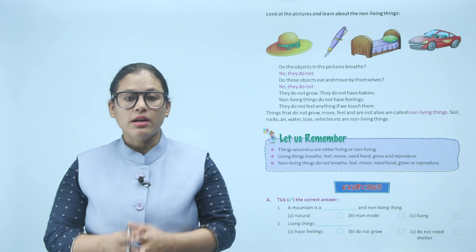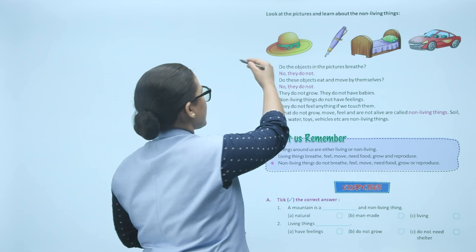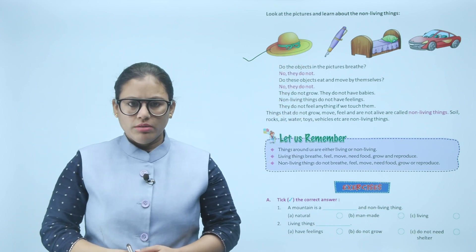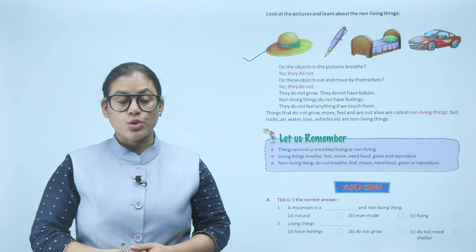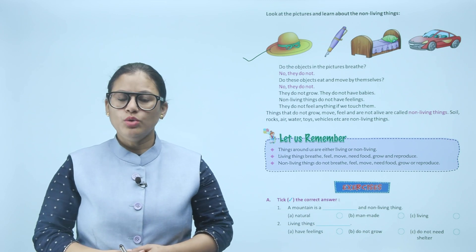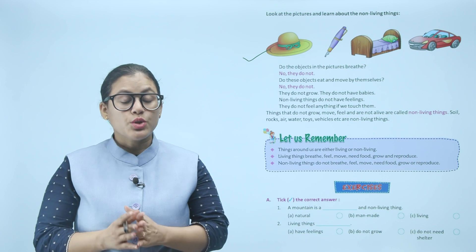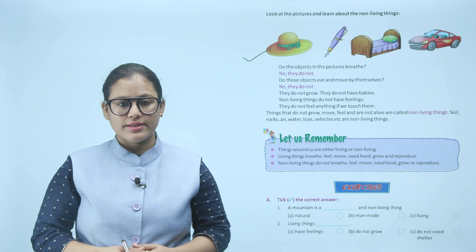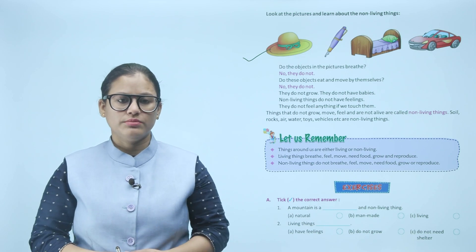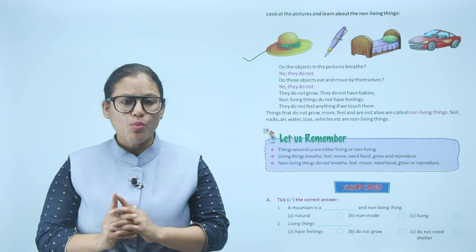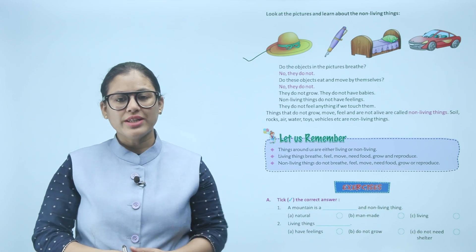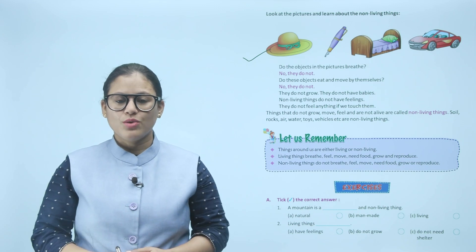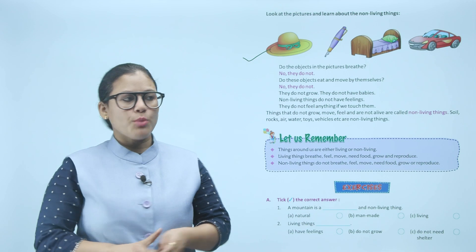Look at the pictures and learn about non-living things. Do the objects in the picture breathe? No, they do not. Do they eat and move by themselves? No. They do not grow, they do not have babies, non-living things do not have feelings. Things that do not grow, move, feel, and are not alive are called non-living things — soil, rocks, air, water, toys are non-living things.